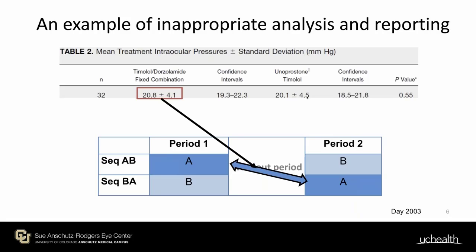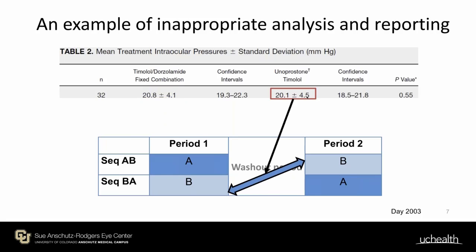Unfortunately, many crossover trials in the past have been incorrectly analyzed and reported in the literature as though the unit of allocation had been individual participants to different interventions. In one example, data from all participants receiving treatment A were combined, and all data from participants receiving treatment B were combined. This is often referred to as a unit of analysis error, because the unit of analysis — by treatment — is different from the unit of allocation, which should be by sequence. If the within-participant design is ignored, the resulting point estimate may not be biased, but the precision or p-value would be different — most likely the confidence interval will be wider than it needs to be.